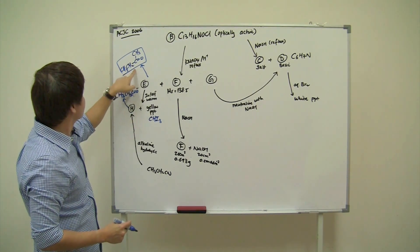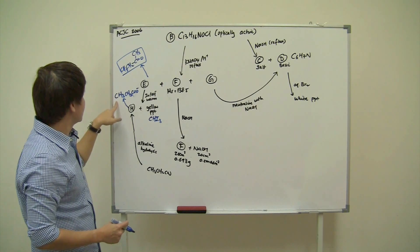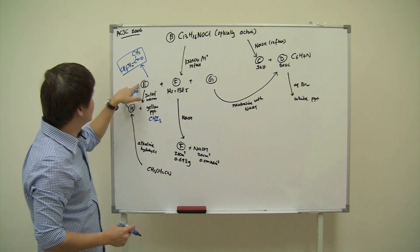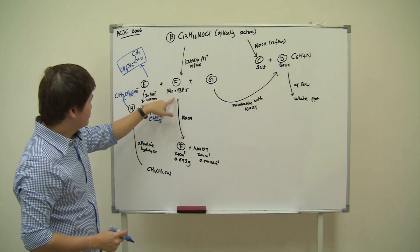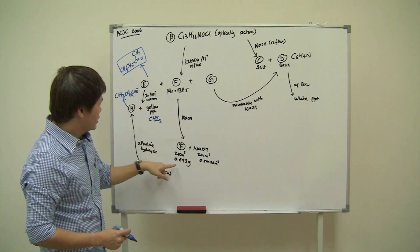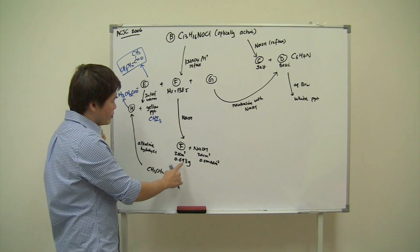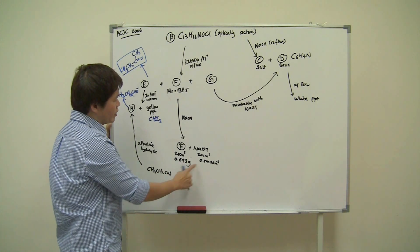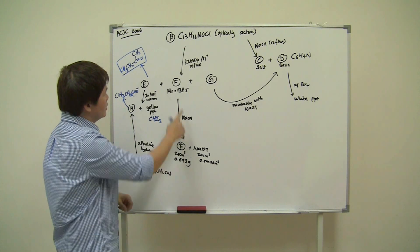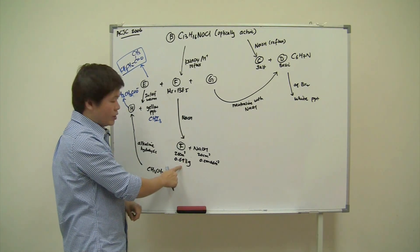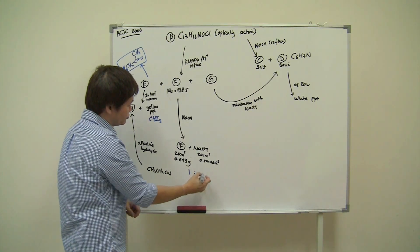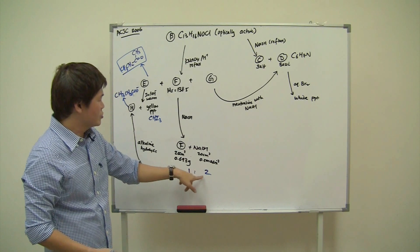So we've solved E and H. Now let's look at F. F undergoes neutralization with hydroxide and these numbers are given: calculate the moles of F from the mass (0.693 g) and MR (138.5), and calculate the moles of NaOH from its volume and concentration. You'll find that the mole ratio between F and hydroxide is 1 to 2.